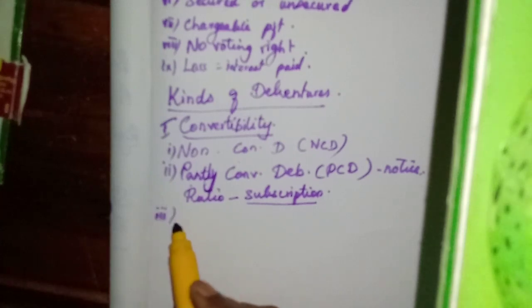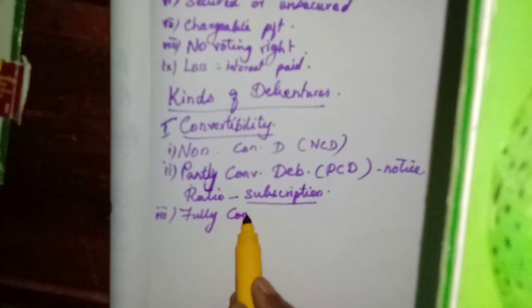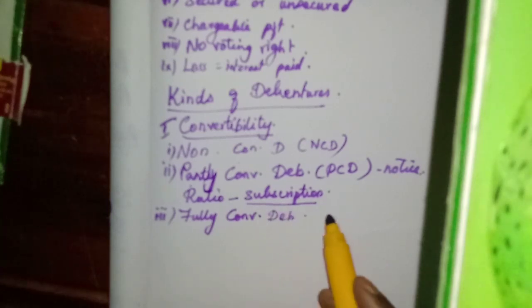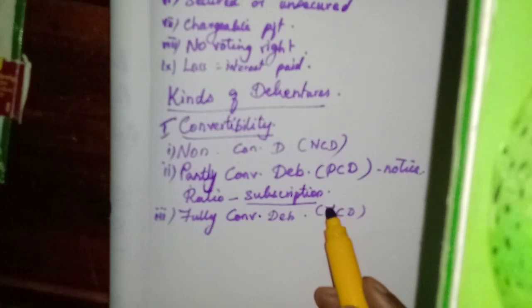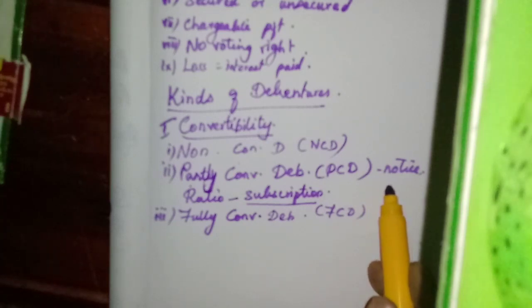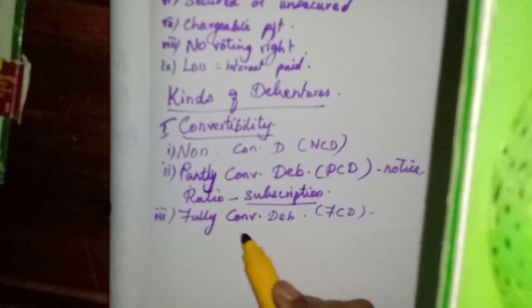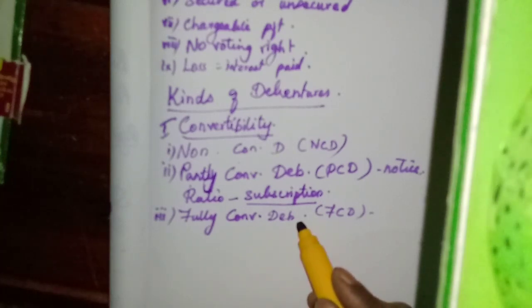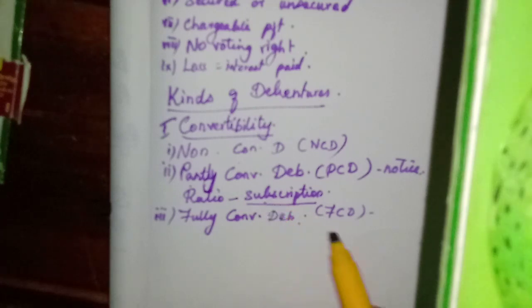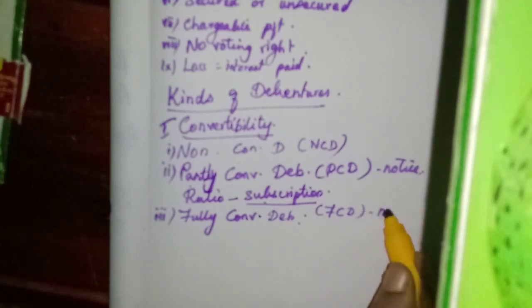The third category is fully convertible debentures. Here the debentures will be fully convertible into equity shares. They also must be converted after the issuer's notice, and the ratio will also be decided by the issuer at the time of subscription. Once they are converted into equity shares, the holders will become the members of the company.